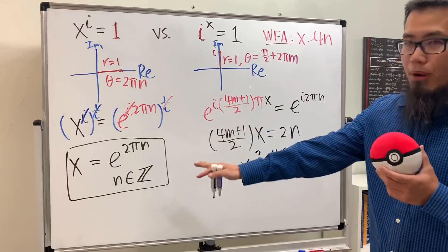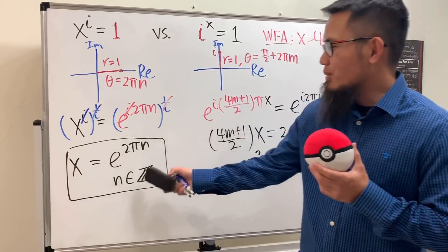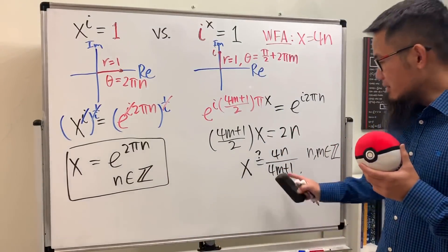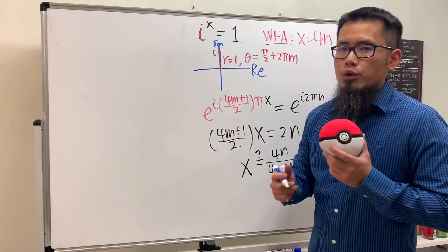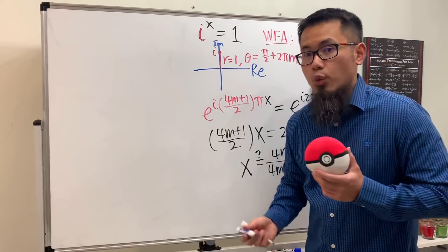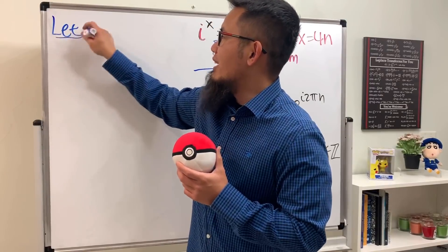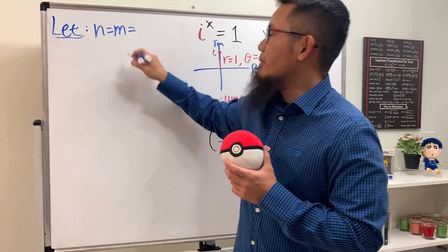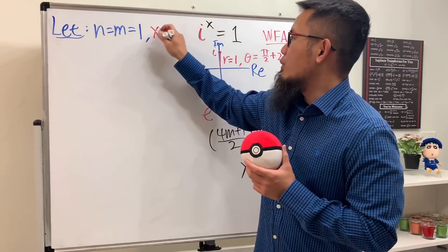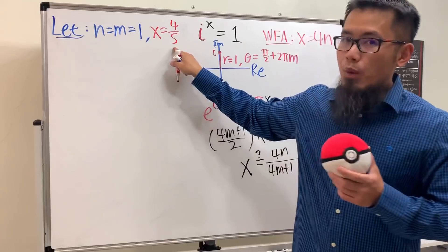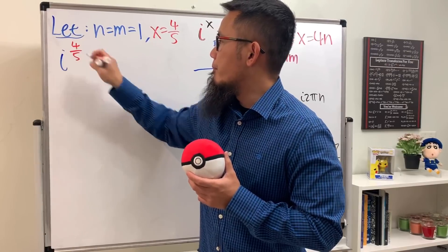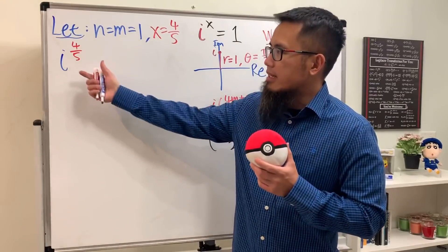We are done with that part. I just want to show how we can rewrite i into polar form and get all the answers, which is really neat. Right now we're going to pick some n and m values so we can figure out what x is, and then plug it into the original equation to see if it really works or not. Let's start with something easy — let's pick n equal to m equal to 1.